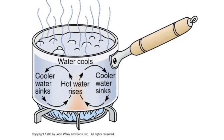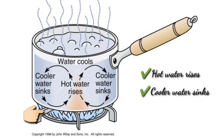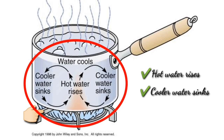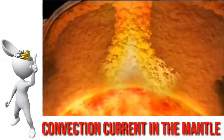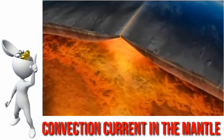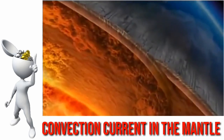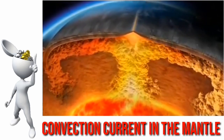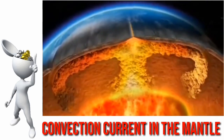Convection in the mantle behaves the same way convection happens in a pot of soup on a hot stove. The material near the heat source becomes hot and expands, making it less dense than the materials above. Buoyancy causes it to rise, and cooler materials flow in from the sides, then sink at the bottom — creating cycles of sinking cold and rising warm material. This is how convection happens in the Earth's mantle.